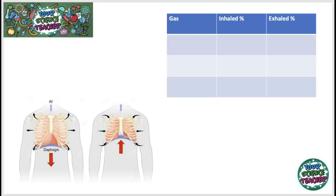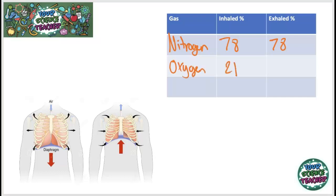If we compare the air we breathe in to the air we breathe out: nitrogen, the main component of air at 78%, stays exactly the same because our body doesn't use it. Oxygen makes up about 21% of the air we breathe in and goes down to around 16% in exhaled air. Carbon dioxide only makes up around 0.04% of inhaled air but rises to around 4% of the air we breathe out.